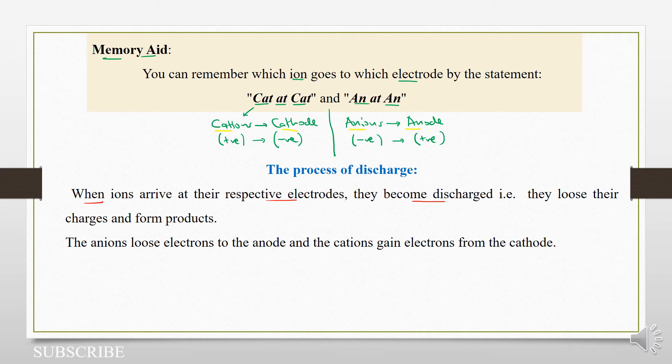Remember, ions are charged. To discharge is to remove the charge. So they lose their charges and form what we shall call products.